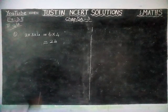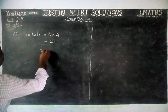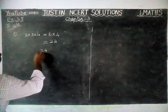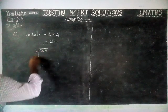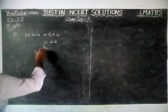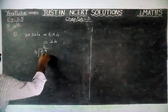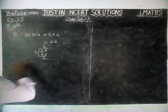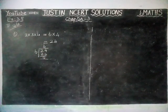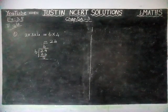We are going to check it. 24 divided by 6. 4 sixes are 24, remaining is 0.